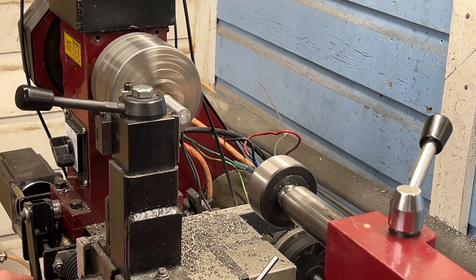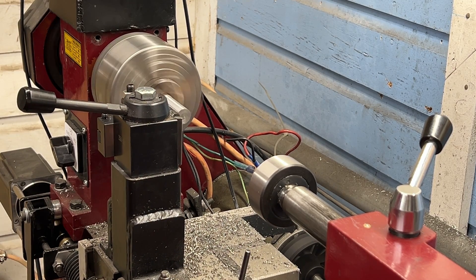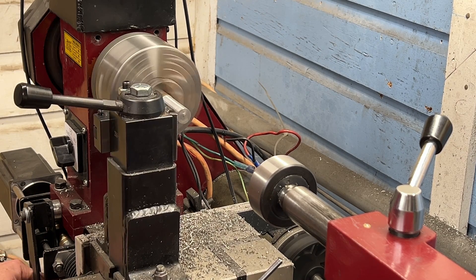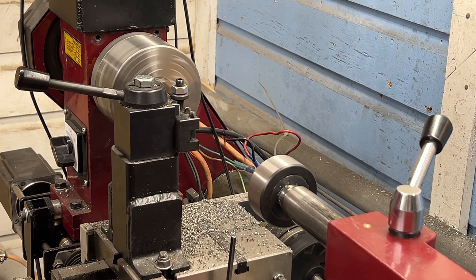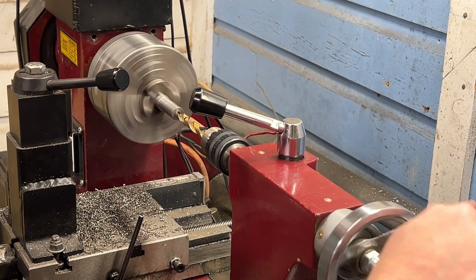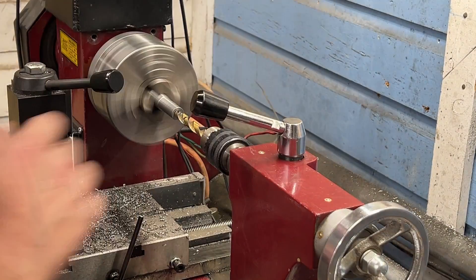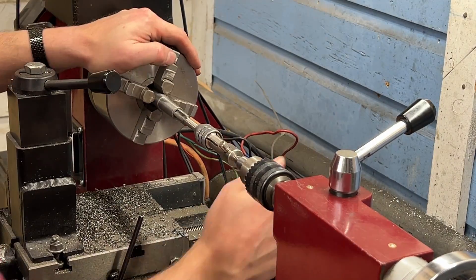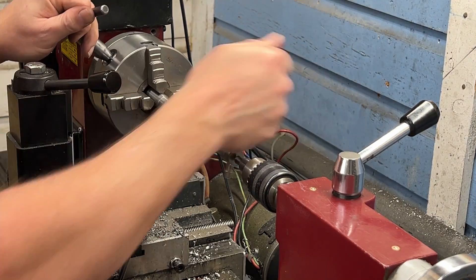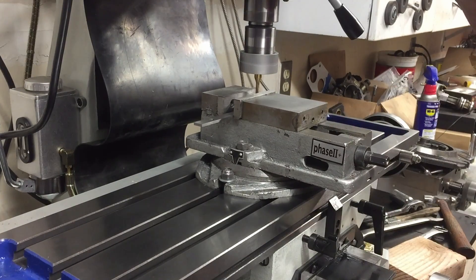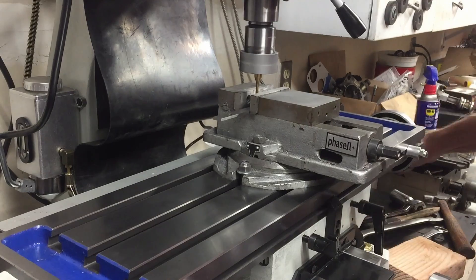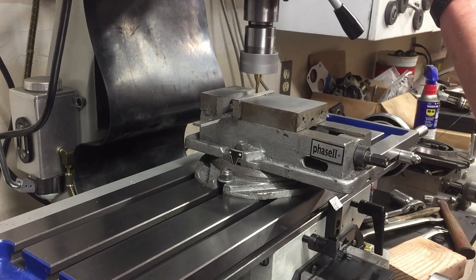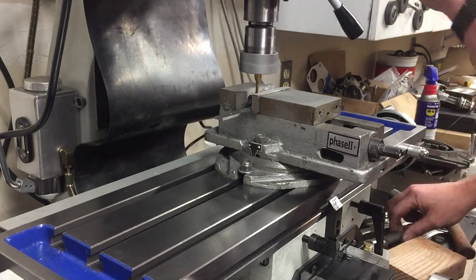Making the actual adapter was the easy part. All I had to do was true up the outside of the piece of steel, face the end, and then center drill it to the correct size to be tapped for M12 because M12 was the threads on the end of the lead screw. Once I had it tapped, I took it over to the mill and I used a 3/16 inch end mill to cut the groove for the keyway. This is all very basic stuff, easy to figure out, and is not the reason that I made this video.